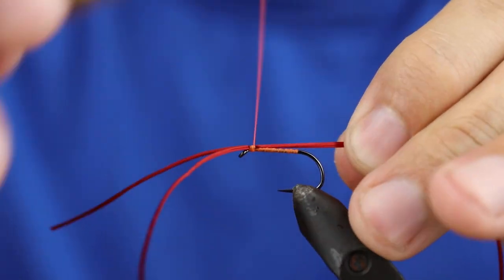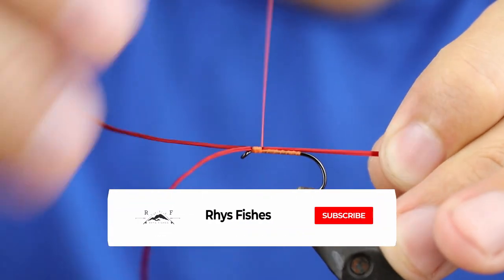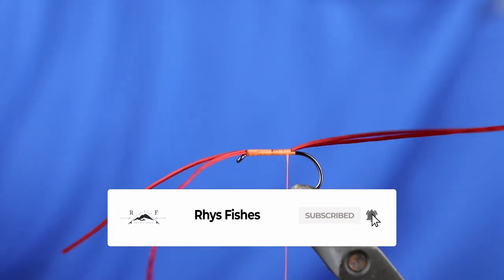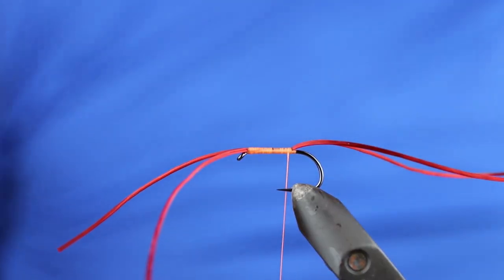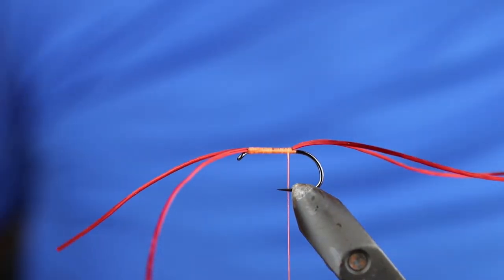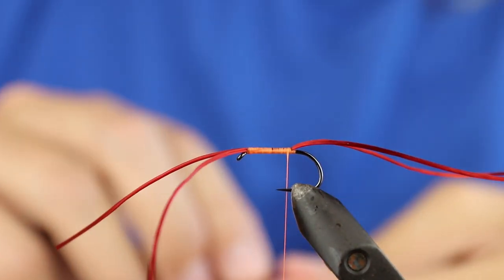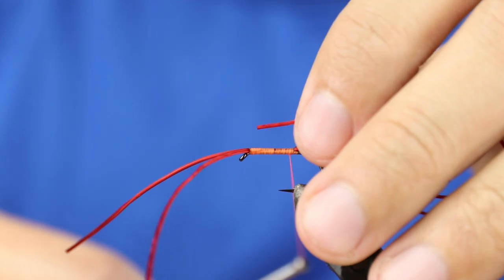So then bring the rest of it down and rest that. What we're then going to do is we're going to take one strand and use that as the rib. Same again, so we'll bring that in there.